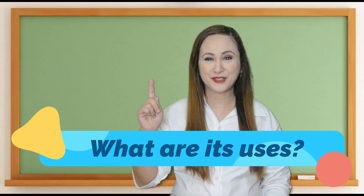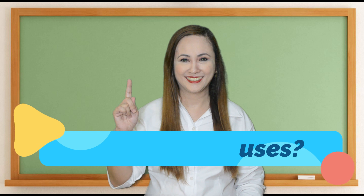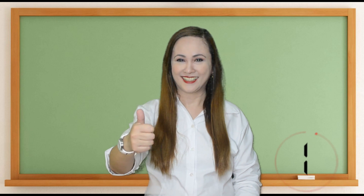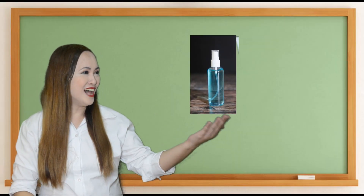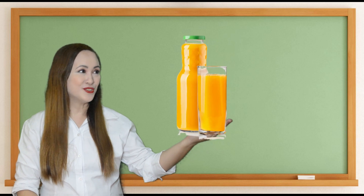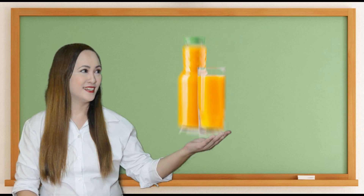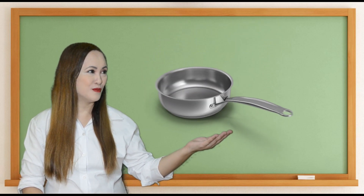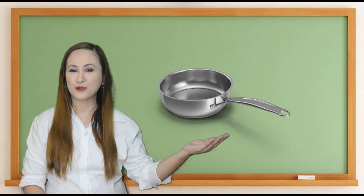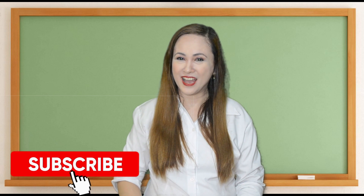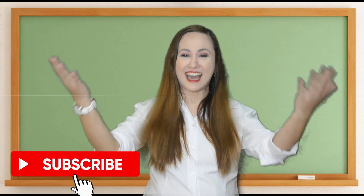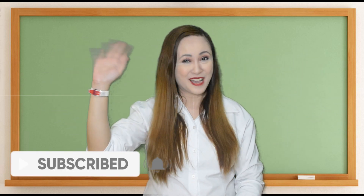What are the uses of solutions? Alcohol is used to disinfect. Juices give refreshment. Air is dissolved in beverages and used as preservatives. Stainless steel is used to avoid rust, for durability, and to improve products. I hope you learned something! See you next time for another science virtual class. This is Teacher Joyce Alba. Stay healthy and safe! God bless! Bye!